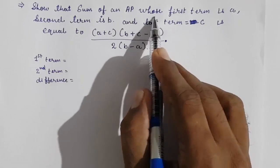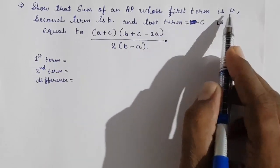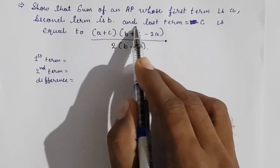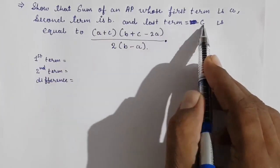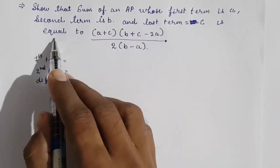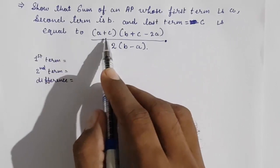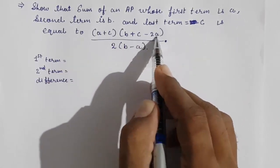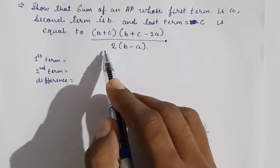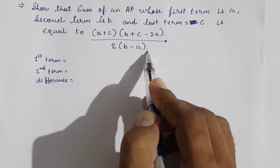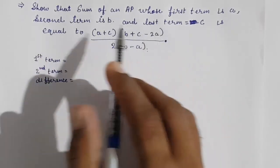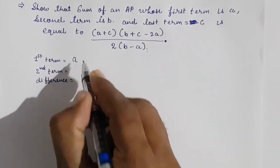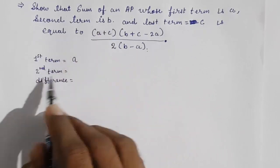So let us start with this problem: show that the sum of an AP whose first term is a, second term is b, and last term equals c, is equal to (a + c)(b + c - 2a) upon 2(b - a). This is what we have to prove.